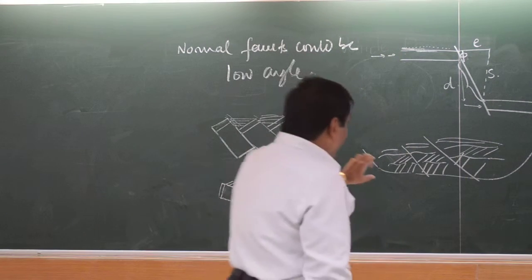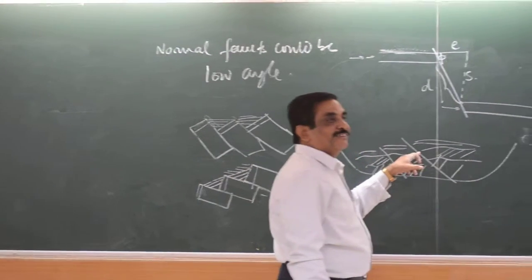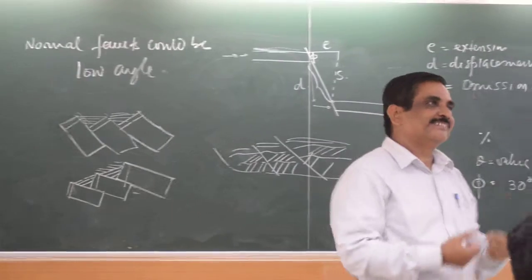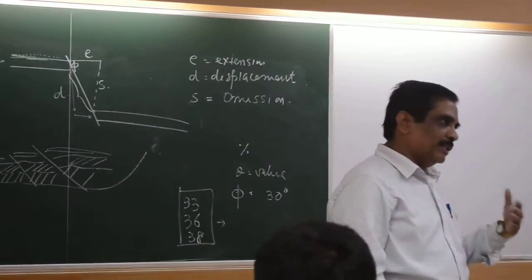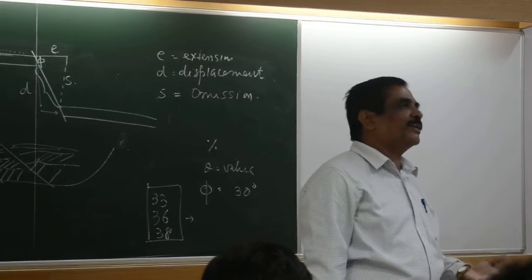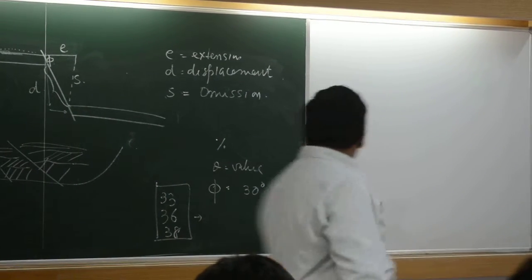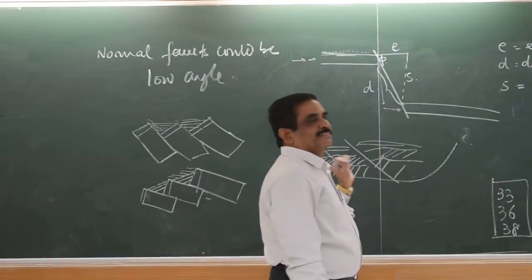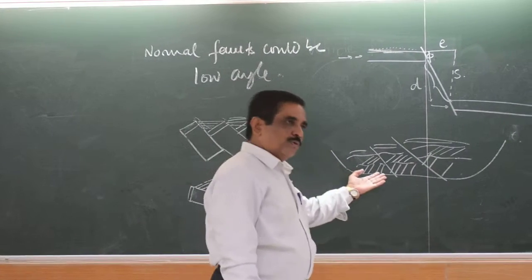So, if you find this variation, you call this fault a growth fault. That means faulting is continuing and growing up. So the basin is becoming different and different. It is just because of the rotation of these faults.